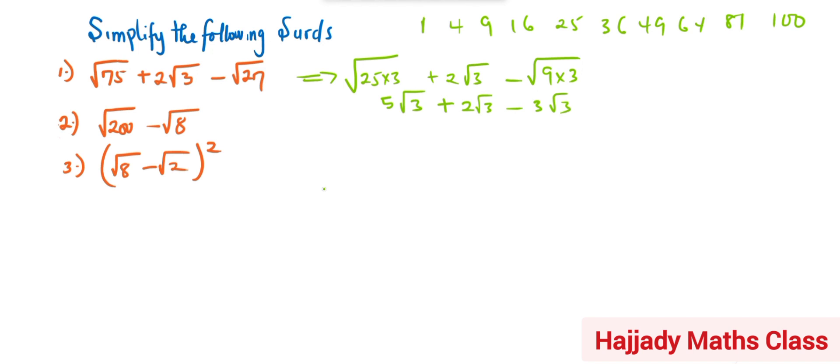Now, minus root 9 is the same as 3 root 3. As a hint: when we have 5x plus 2x minus 3x, the variable x is the same throughout. We just add the coefficients while the variable remains the same, giving us 4x. The same applies here — root 3 remains the same, so 5 plus 2 minus 3 gives us 4 root 3.